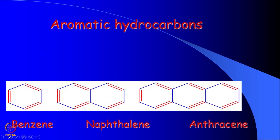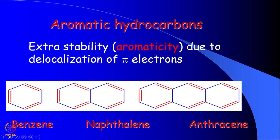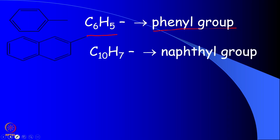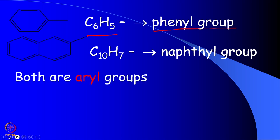Another class of cyclic compounds are the aromatic hydrocarbons: benzene, naphthalene, anthracene, and others. These molecules are more stable than some hydrocarbons due to aromaticity and are also called arenes. When a C6H5 group is attached to any compound it is called a phenyl group. Similarly, naphthalene with one hydrogen removed is called a naphthyl group. These are collectively called aryl groups.